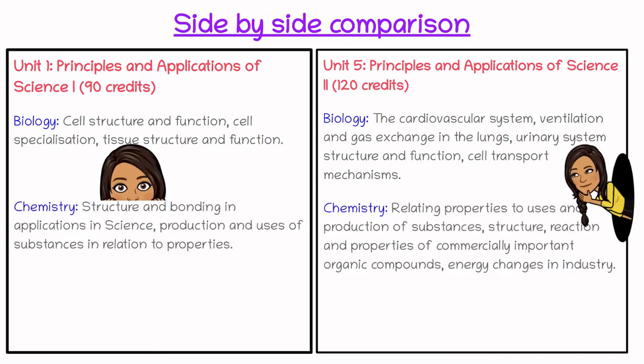In the chemistry section, Unit 1 looks at structure and bonding in applied science. You look at periodic table elements and learn about the electronic structure of atoms and bonding, as well as mathematical aspects like balancing equations, relative atomic mass, and percentage yields. You also learn about the periodic table in terms of group arrangement, SPD notation or block arrangement, and what that means for elements' properties.